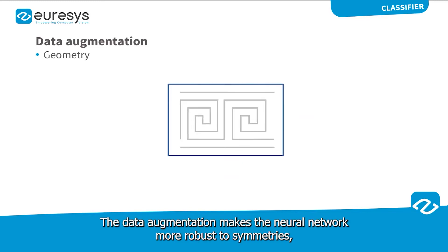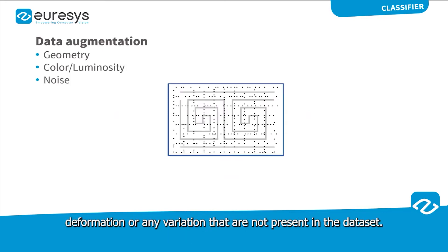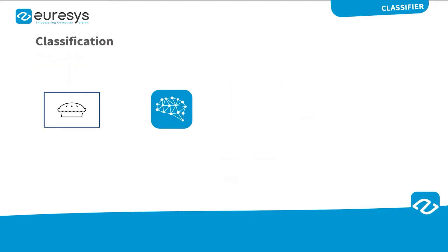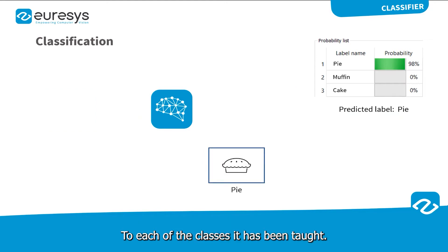Data augmentation features are also available to artificially increase the number of images in the dataset. The data augmentation makes the neural network more robust to symmetries, deformations, or any variations that are not present in the dataset. After this training process, the classifier is able to classify images, which means that for any given image, it returns a list of probabilities showing the likelihood that the image belongs to each of the classes it has been taught.